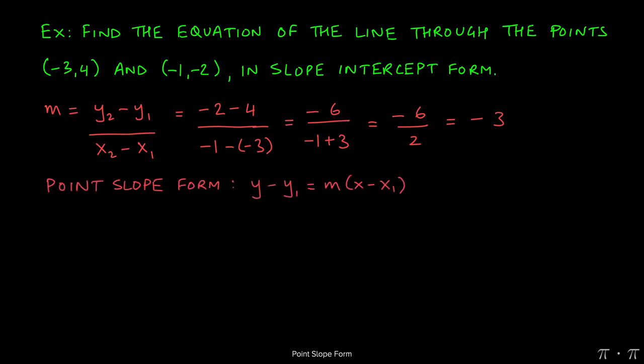Now, if we were to use the point-slope form to start, we could use either point: (-3,4) or (-1,-2). Let's say we use (-3,4) for no other reason other than to say that it's written first. The answer would be identical had we used the second point as well.